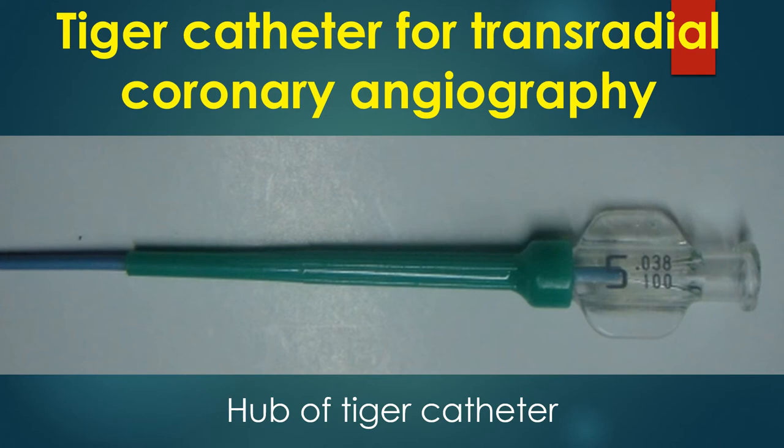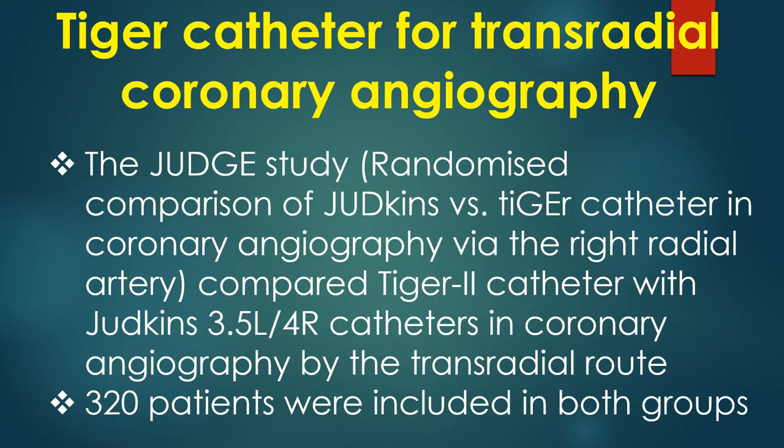Since most catheters taper to 5F, the maximum guide wire size for most diagnostic catheters is the same — 0.38 inch. The JET study compared the TIGER II catheter with Jutkins right and left catheters in coronary angiography performed by the transradial route.